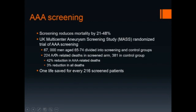In the screen group, there were 224 abdominal aortic aneurysm related deaths, while there were 381 abdominal aortic aneurysm related deaths in the control group, resulting in a 42% reduction in AAA-related deaths as a result of screening. Overall, patients in the screen group had a 3% reduction in all deaths. This results in one life saved for every 216 screened patients.